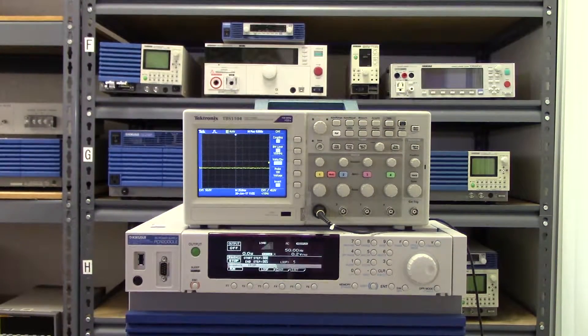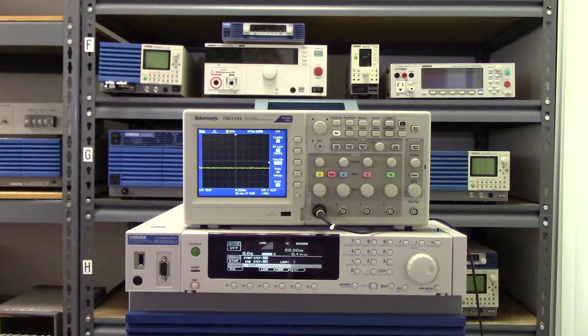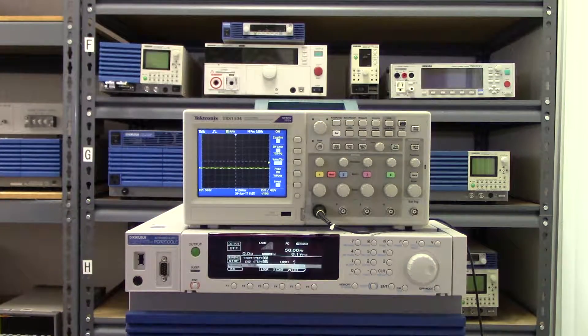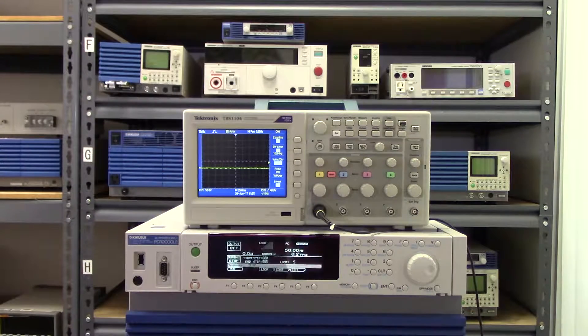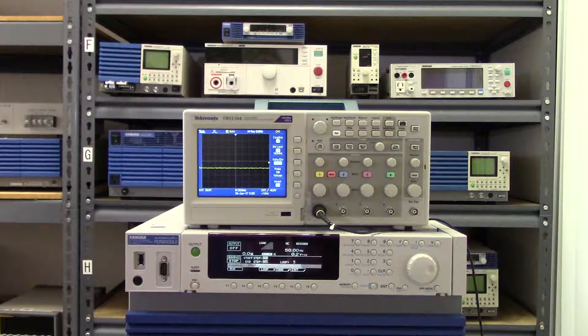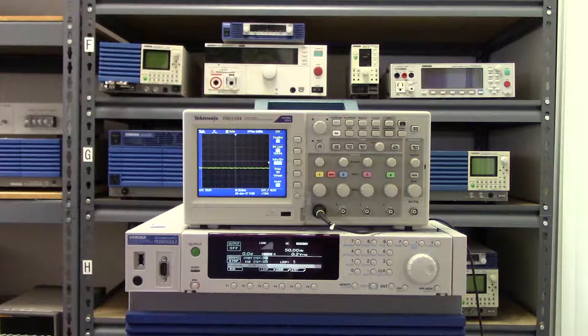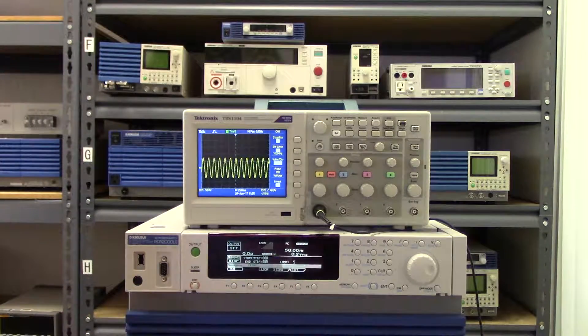This is the Kikusui PCR2000LE, the 2kVA model from our flagship PCRLE AC and DC power supply. In this video, we want to show and explain the sequence program function of the PCRLE, both in AC and DC mode.